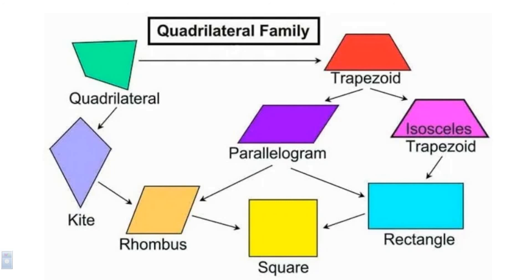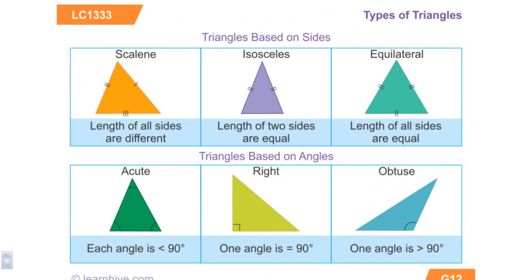That top left quadrilateral is just an example of one that doesn't fit into any special category — it simply has four sides, which is the only requirement for a quadrilateral. So this was a quick introduction to polygons and a closer look at triangles and quadrilaterals. In the next video we're going to look at how to find the area of some quadrilaterals and triangles. Thanks for watching everybody.